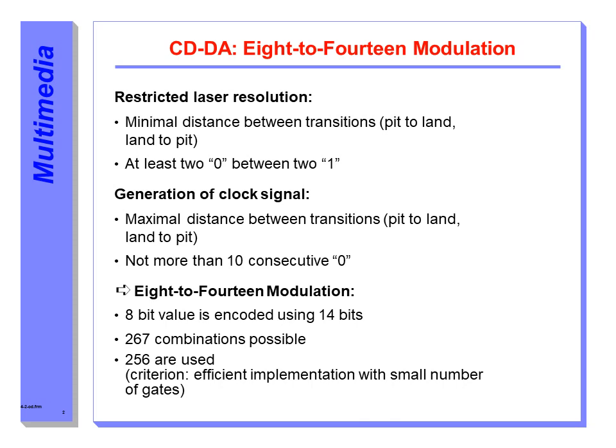There can be at most ten consecutive zeros as channel bits. The maximum distance between transitions of pit to land and land to pit will be no more than ten consecutive zeros. For this reason, the bits written on a CDDA in the form of pits and lands do not correspond directly to the actual information.